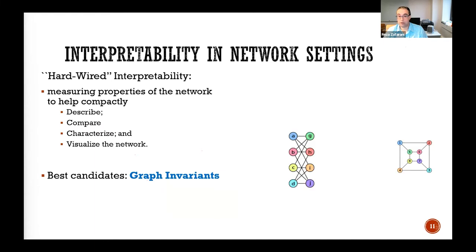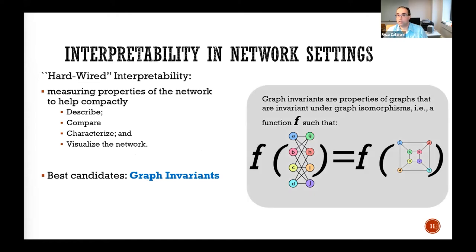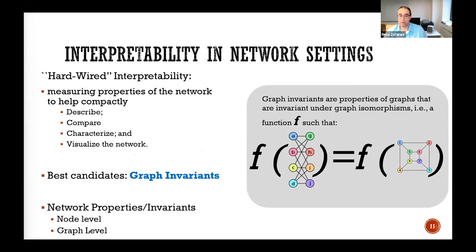Think of two graphs that are isomorphic — labeled and drawn differently but with the same kind of connections, so there is some permutation that maps graph one to graph two. A graph invariant is a function that takes these two graphs as input and outputs the same value — it is invariant under all isomorphisms. There are different types: node-level invariants and graph-level invariants.